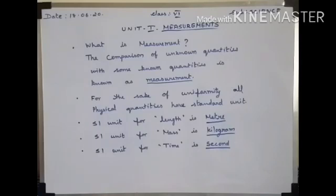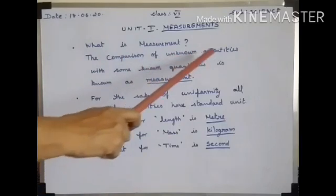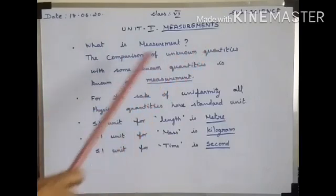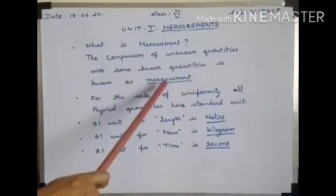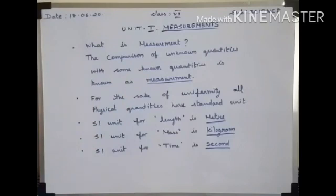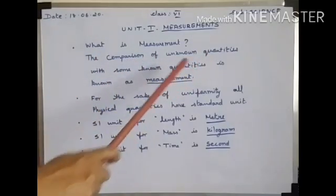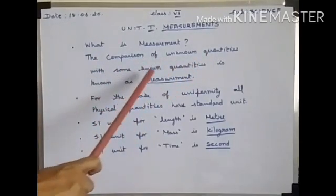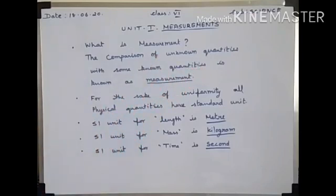Now, what is called measurement? The comparison of unknown quantities with some known quantities is known as measurement. For the sake of uniformity, all physical quantities have a standard unit.